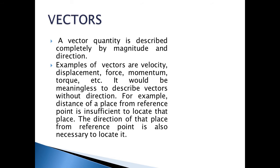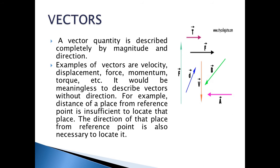Vectors: a vector quantity is described completely by magnitude and direction. Examples of vectors are velocity, displacement, force, momentum, and torque. It would be meaningless to describe a vector without direction. For example, the distance of a place from a reference point is insufficient to indicate that place — the direction is also necessary to locate it. For example, a tree is located 3 meters to the east of a house, and another tree or a cycle is placed 4 meters north of the house.